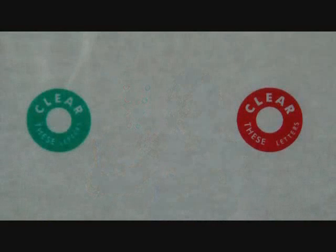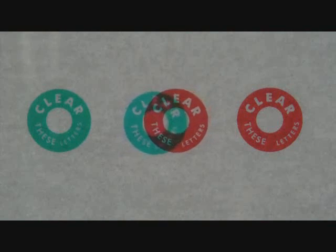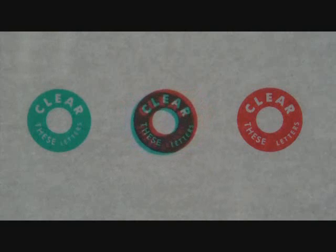As you move the pencil away from you, you should notice two circles at first, then four, then three, with the middle one being a mixture of the red and green colors. You want the middle circle to float away from you with all the letters being present. It should read, clear these letters.